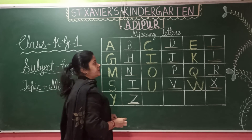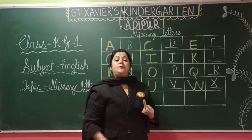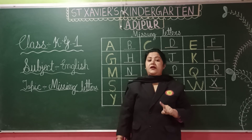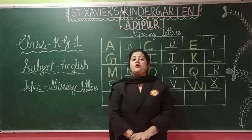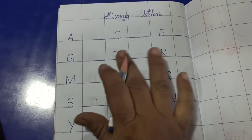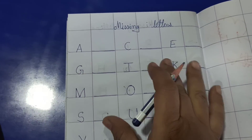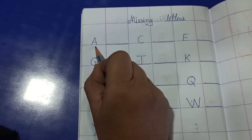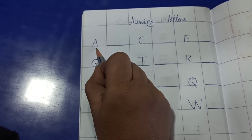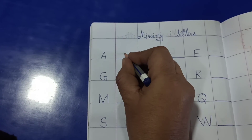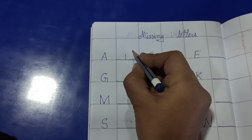Okay kids? Now we will do practice in your book. Now children, how will you write missing letters? Start from A. What comes after A? B. So you will write here B.